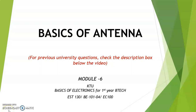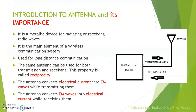In this lecture, we will be covering the basics of antenna. First of all, what is meant by antenna and what is its importance? Antenna is a metallic device for radiating or receiving radio waves. It is the main element of a wireless communication system and is used for long-distance communication.